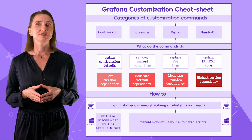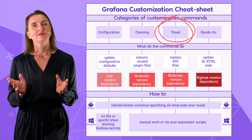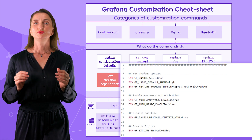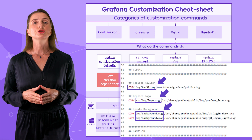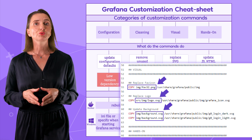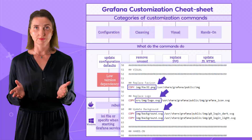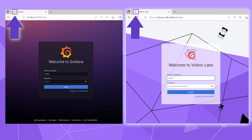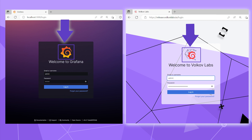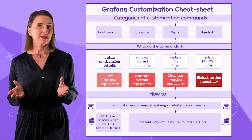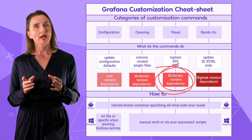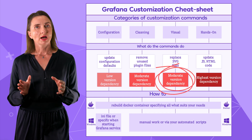The next category of customization commands I like to call Visual. Before running them, you must prepare the appropriate SVG files with the graphics you want to use instead of the Grafana defaults. You can customize the icon at the browser tab, the main authorization page logo, background, and some other elements. Same version dependency as for the cleaning commands — I put moderate here.